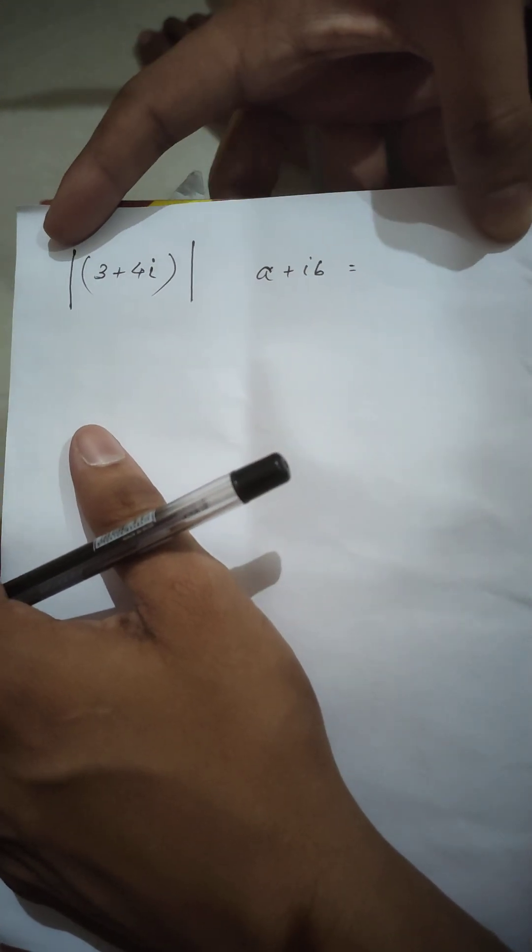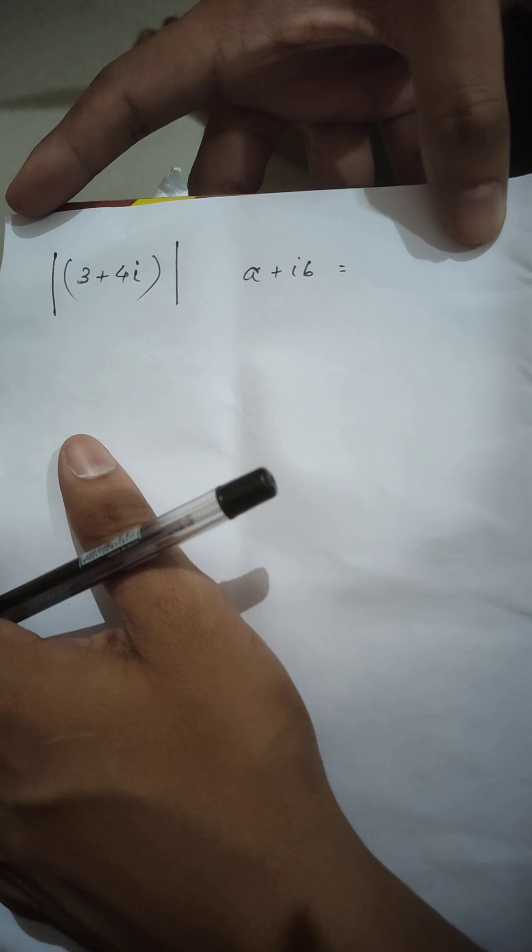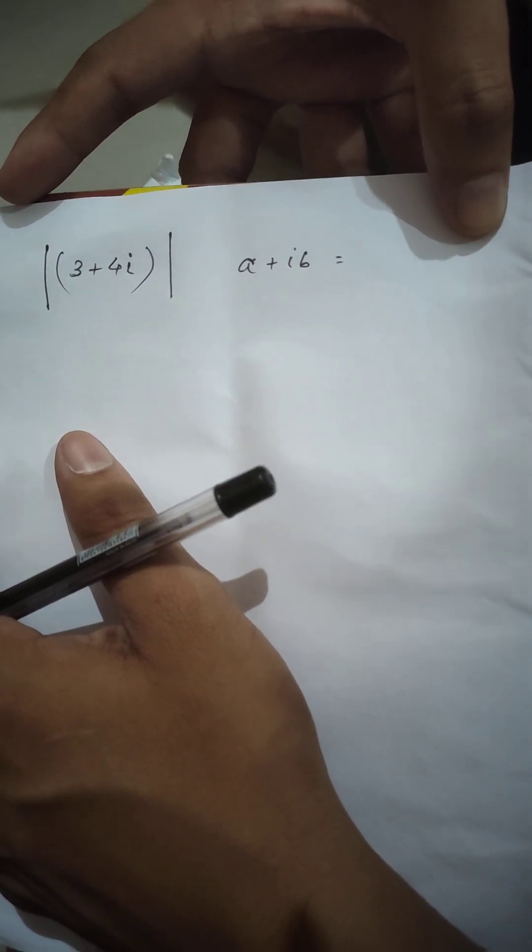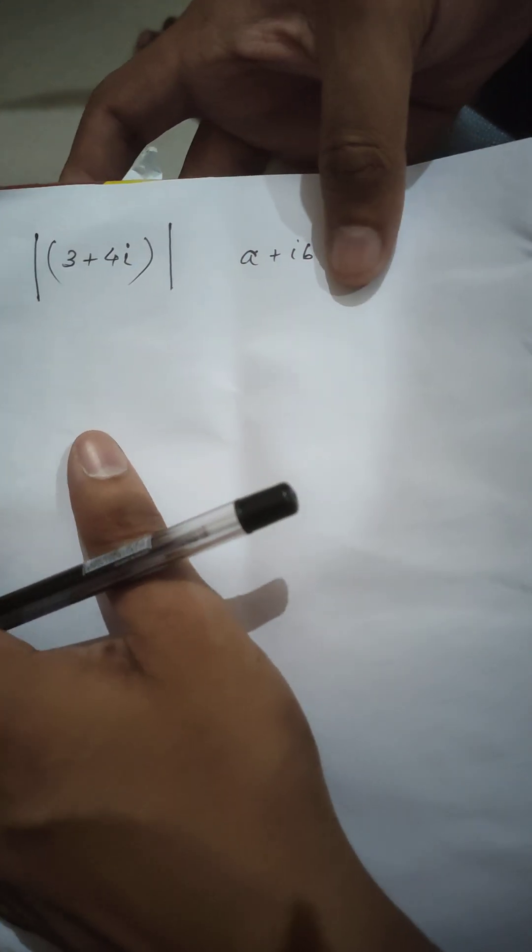Hello everybody, so till now I have taught you how to input the complex number in the fx991 Casio calculator. I've also taught you how to convert the Cartesian form into polar form and vice versa. So now we are going to find the modulus of any complex number.